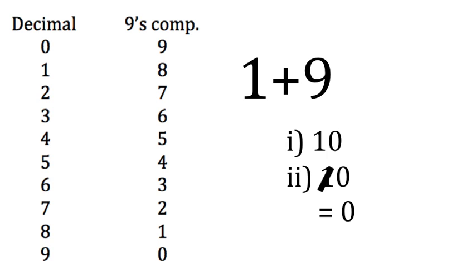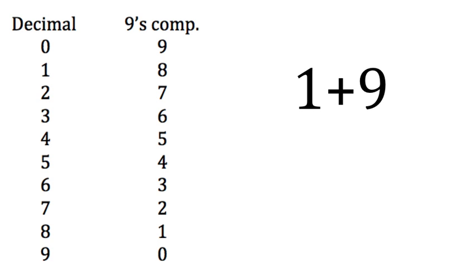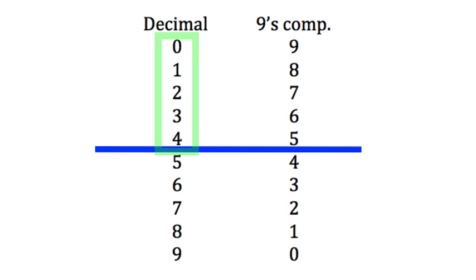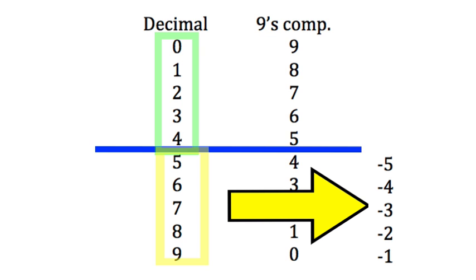Computers use this system for subtraction, and therefore the computer needs a way of knowing which numbers are positive and which numbers are negative. The way we do this is quite simple. We just split the total numbers we have in half.